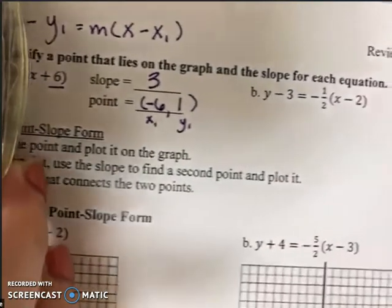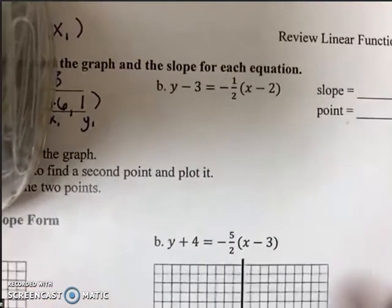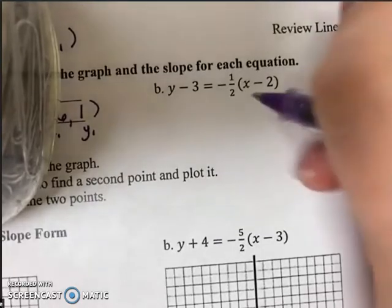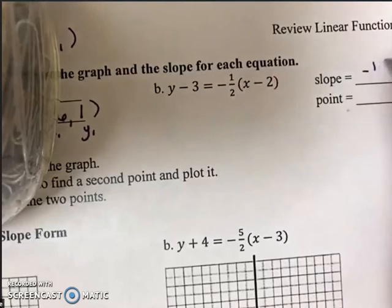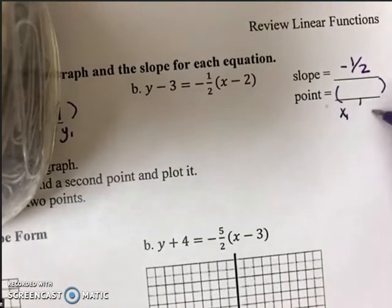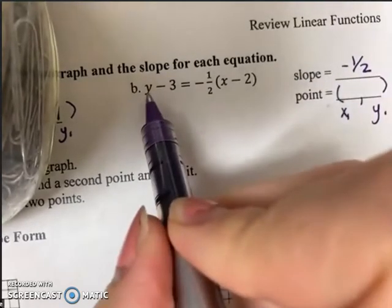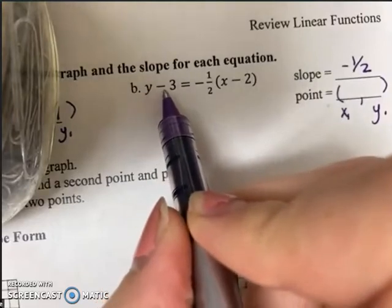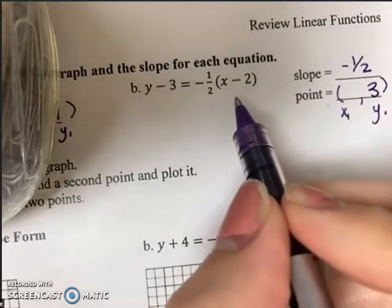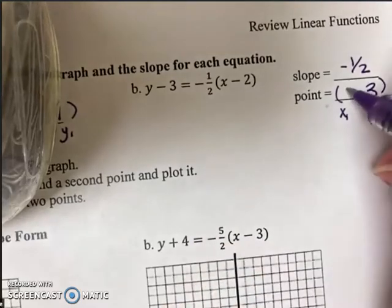Part B of example 3. Again, all we're doing here is we're just analyzing what the slope and the point would be. Keeping in mind our form, the slope would be this number right here, the negative one-half. And the point must always be in the form x comma y. So my x₁ is going to go right here, my y₁ here. Here, the y value will be y minus y₁. So I'm subtracting a positive 3 and x minus a positive 2. So 2 would go here.